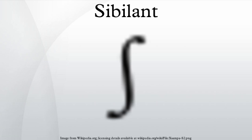Sibilant types: all sibilants are coronal consonants. However, there is a great deal of variety among sibilants as to tongue shape, point of contact on the tongue, and point of contact on the upper side of the mouth.